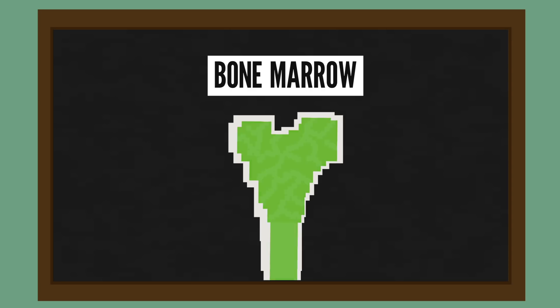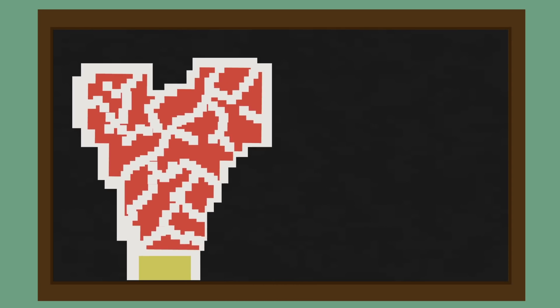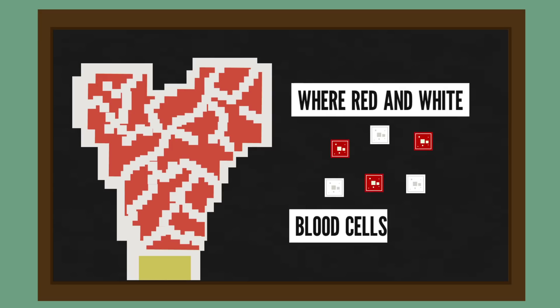Bone marrow is also found inside of your bones, and it's a soft tissue with two types, red and yellow. Red bone marrow is where red and white blood cells are made, and yellow bone marrow is mostly made of fat.